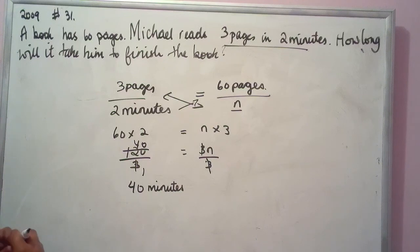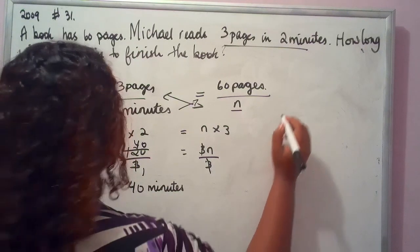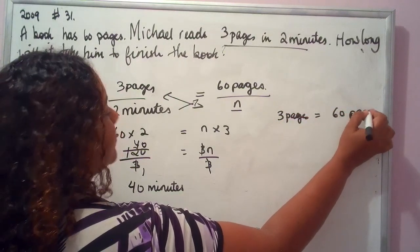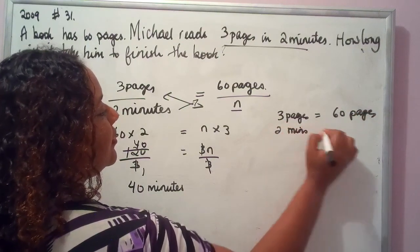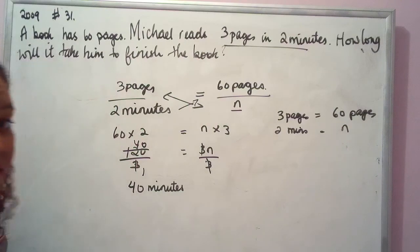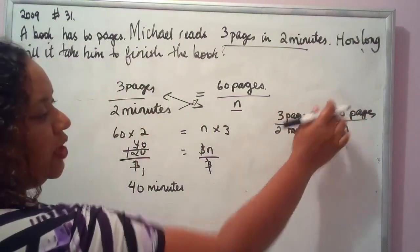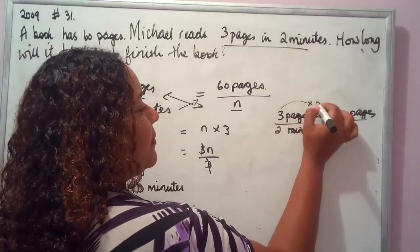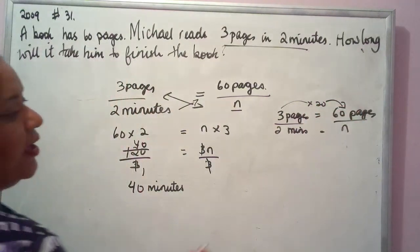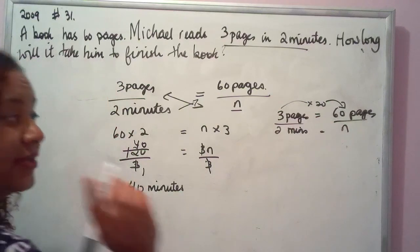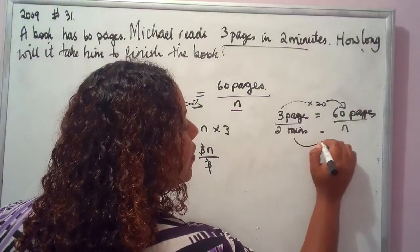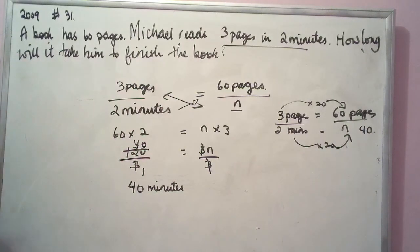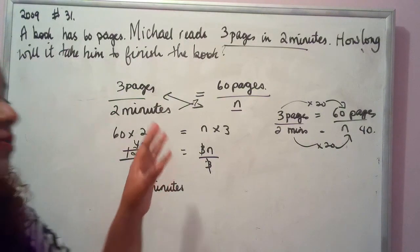Let's look at it using the equivalent fractions method. 3 pages over 2 minutes equals 60 pages over N. We determine that 3 multiplied by 20 equals 60, so we also multiply the bottom by 20. Two by 20 equals 40. So N equals 40 minutes — the same answer from both methods.